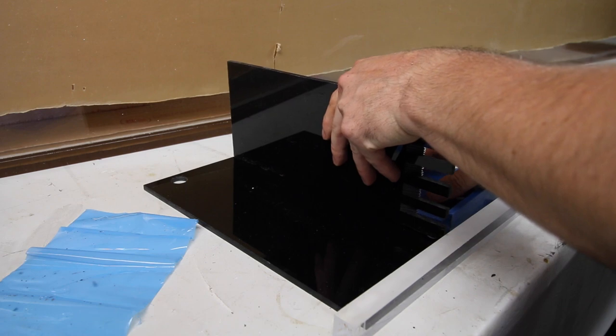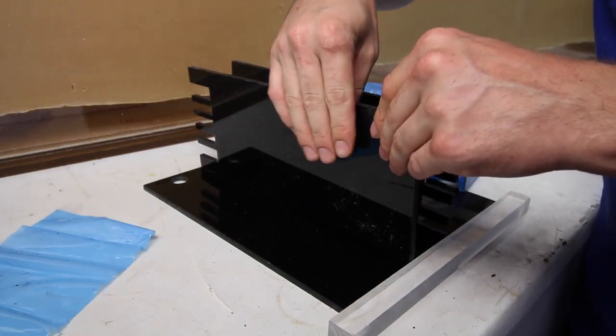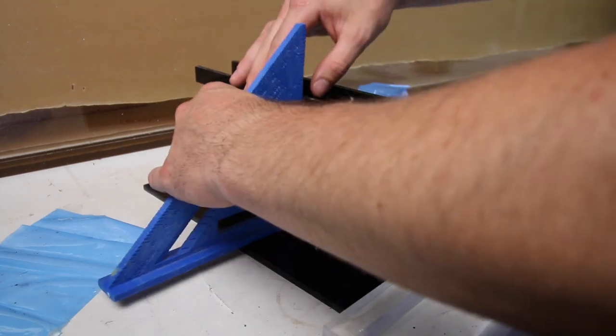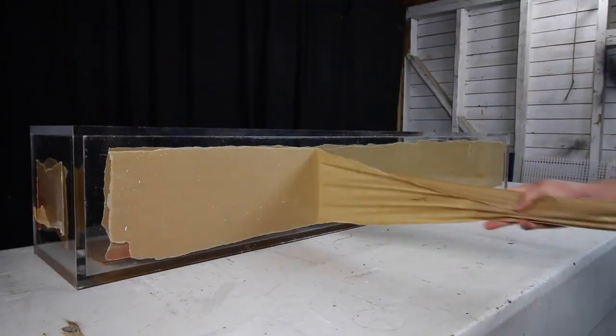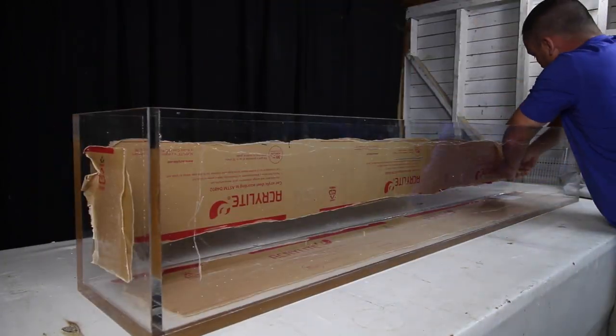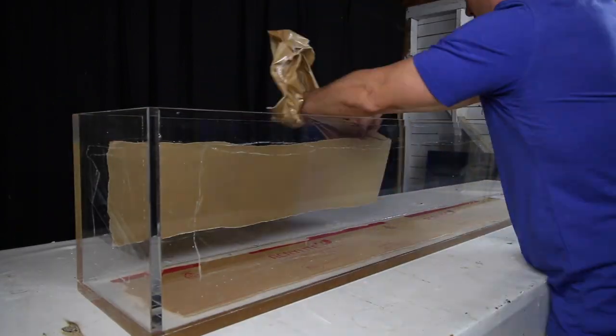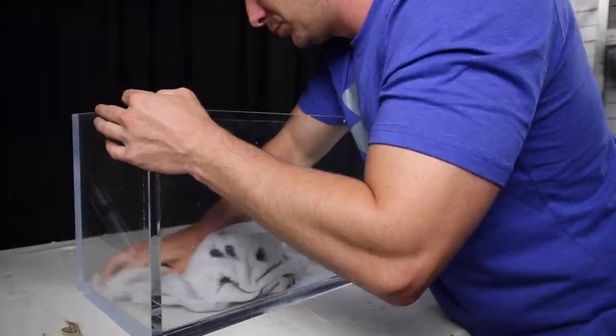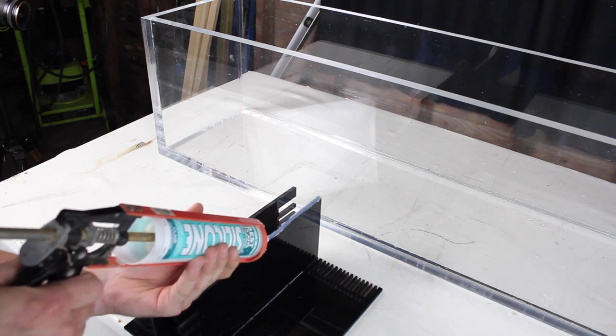Now Weldon 16 is a thicker acrylic cement, but for something like this I tend to prefer it. Then I let it cure overnight. Before installing the filter into the aquarium, I removed all of the protective paper first. Typically I would only remove the inside as the filter is going on the inside, and I wouldn't remove the outside protective tape until